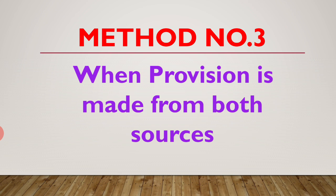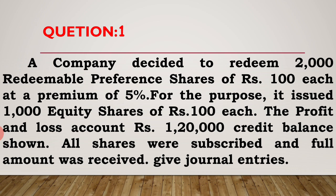Now we talk about today's method number 3: when provision is made from both sources. Remember, method number 1 means only we are using profit converted to CRR. In method number 2, we issue equity shares only. But here in method number 3, when provision is made from both sources, it means some amount we provision from issue of shares and some amount we transfer from profit to CRR. Now we calculate one question related to method number 3.